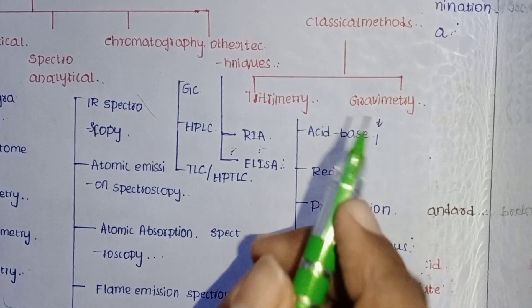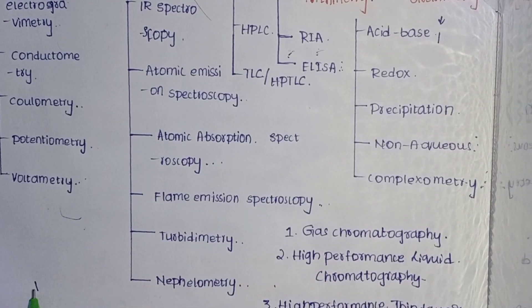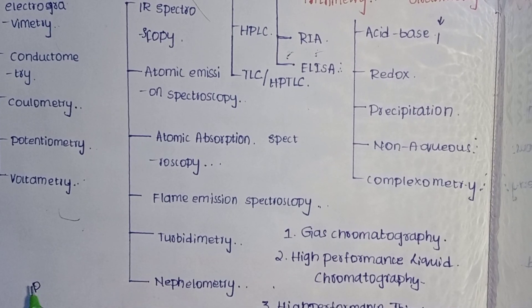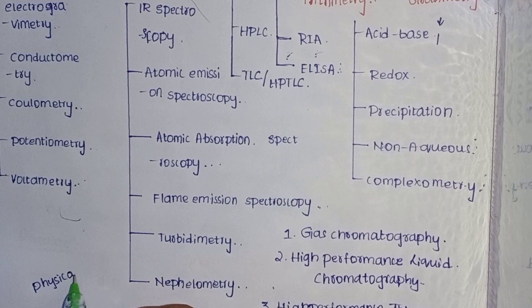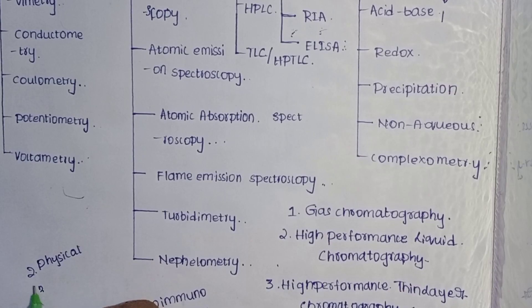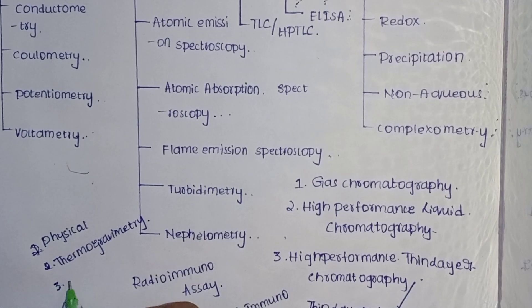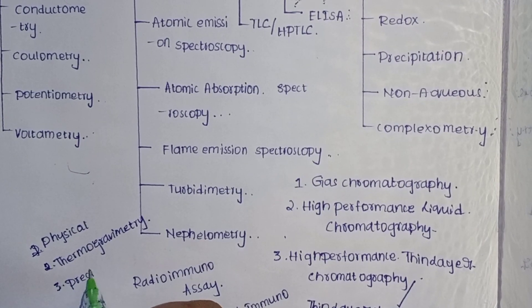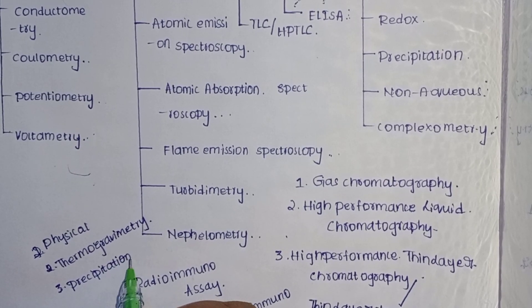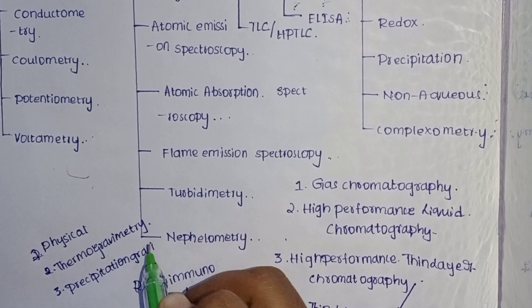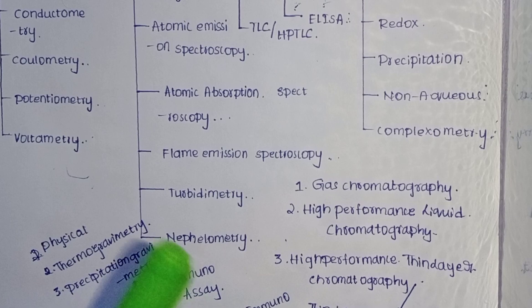In gravimetry, the three most important types are physical gravimetry, thermogravimetry, and precipitation gravimetry. These three are the more important gravimetry processes.